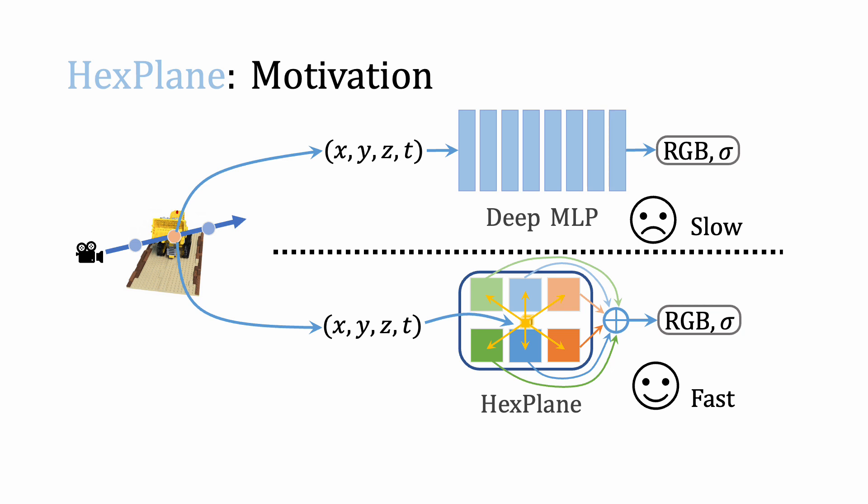Existing methods rely on deep MLPs to calculate the colors and densities of sampled points, which is extremely slow because of tremendous MLP inference. While HexPlane explicitly represents a 4D grid by six feature planes and calculates spacetime point features by interpolation and fusion operations.